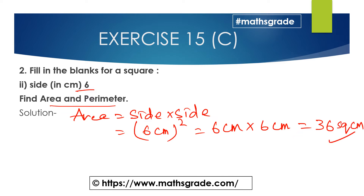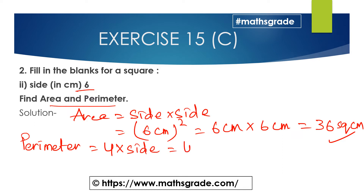Now the perimeter of the square. The formula is 4 multiplied by side. The side is 6 centimeters, so 4 × 6 = 24 centimeters. So the perimeter of the square is 24 centimeters and the area of the square is 36 square centimeters.